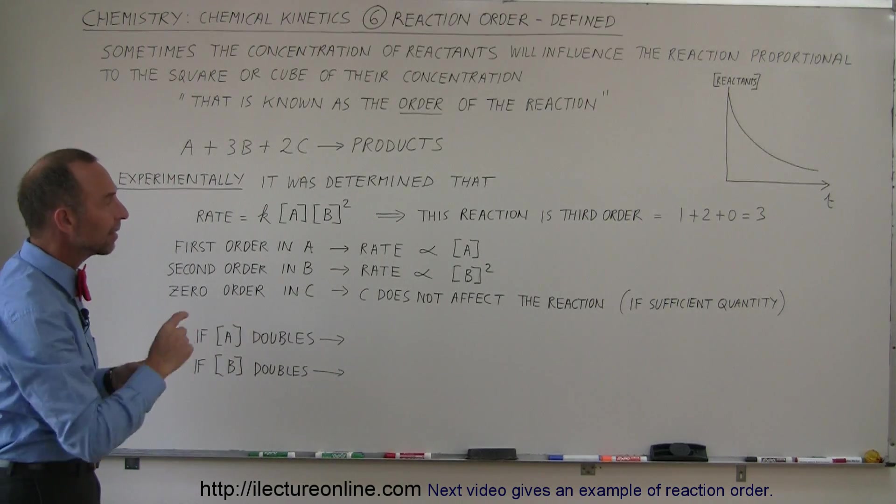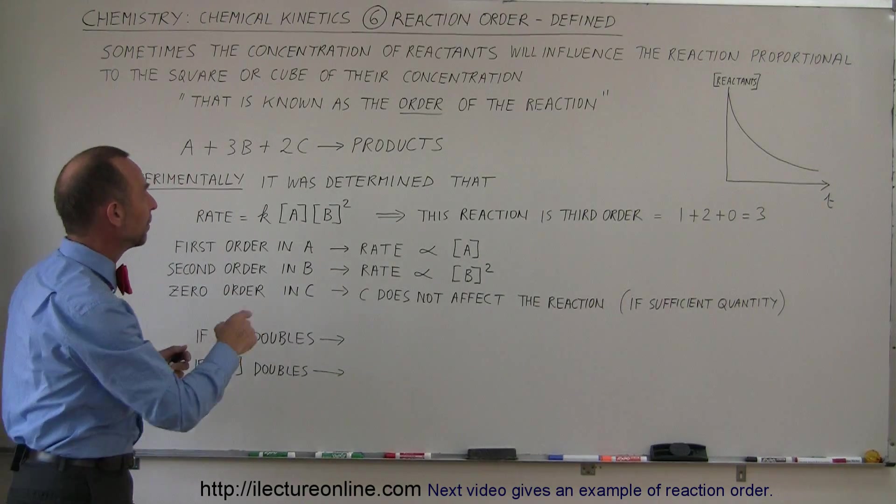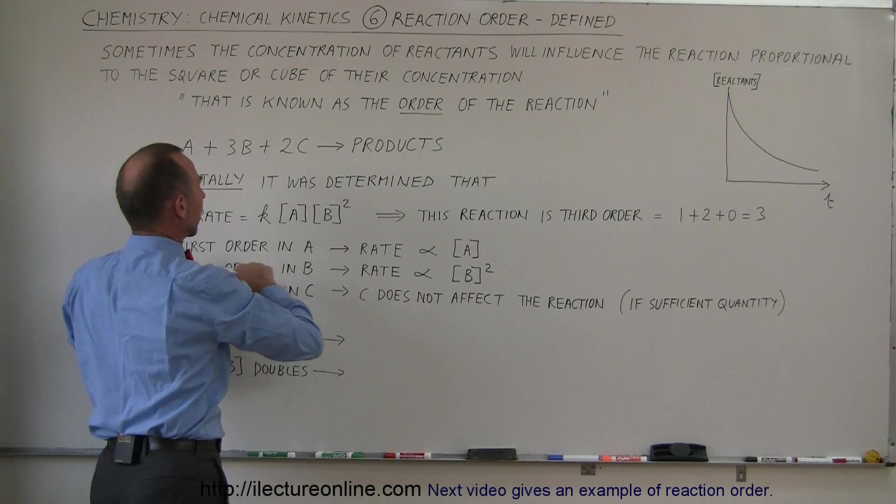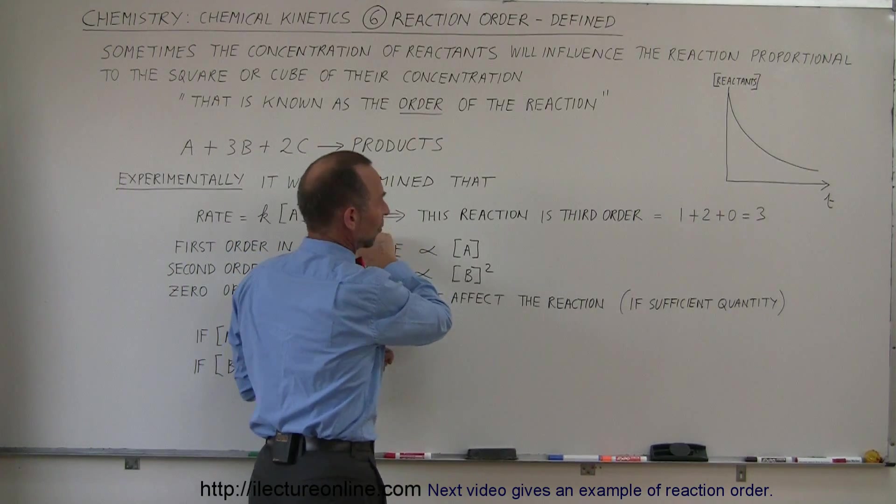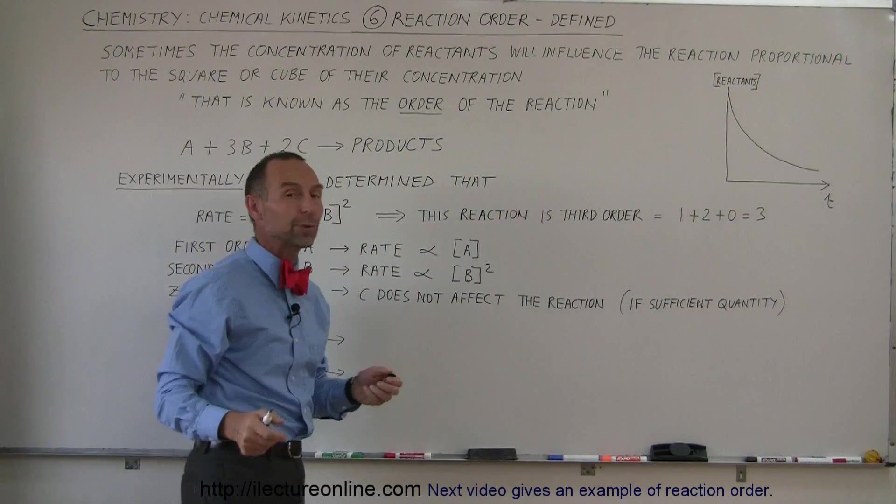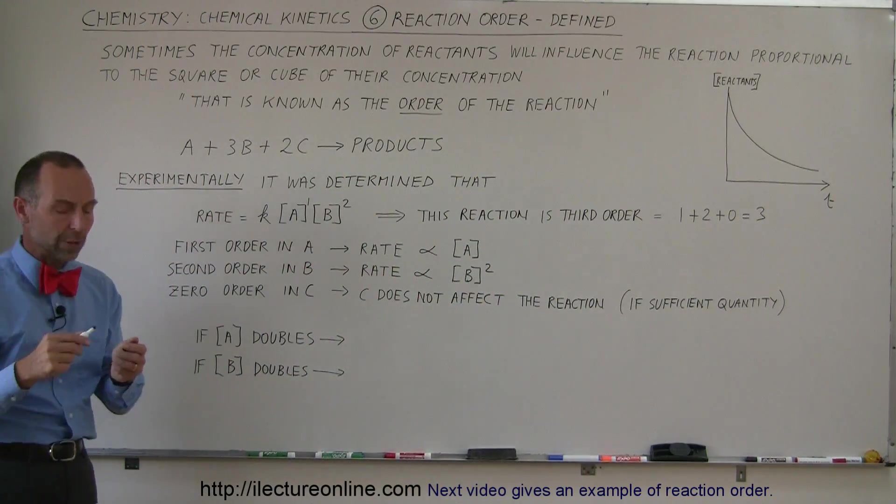So therefore we can say that this reaction is third order because we have the 1 for the concentration of A, we have 2 for the concentration of B, and we have 0 for concentration of C. So 1 plus 2 plus 0 gives us 3. So it's order 3.